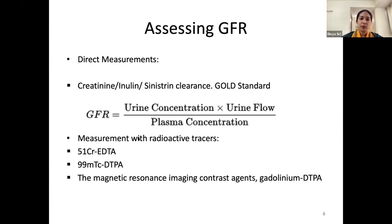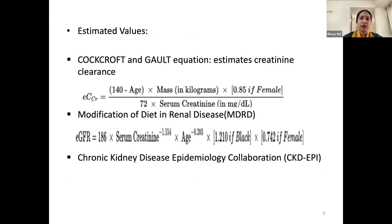Easier measurements of GFR are done using radioactive tracers such as 51-chromium EDTA (ethylene diamine tetra-acetic acid) or 99m-technetium DTPA scans. The MRI contrast agent gadolinium-DTPA may also be used in some centers. These are the methods of direct measurement of glomerular filtration rate.